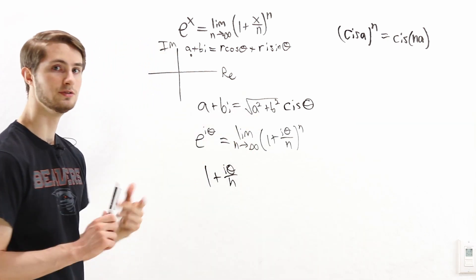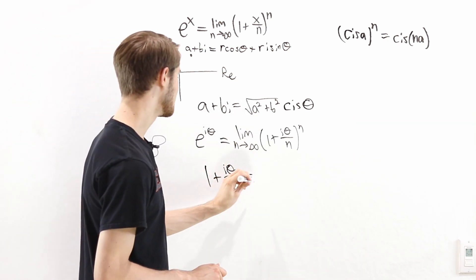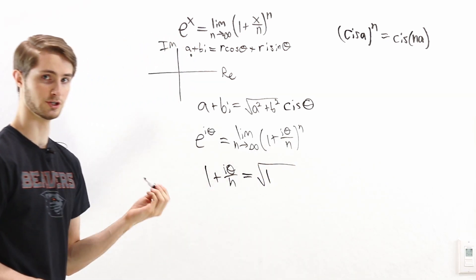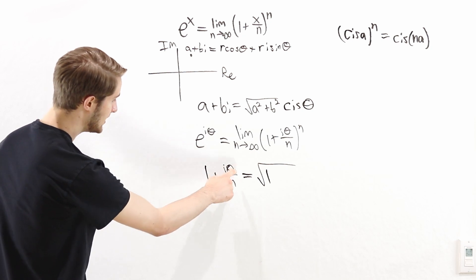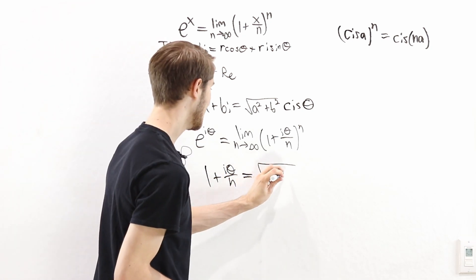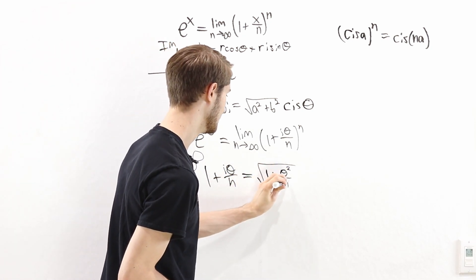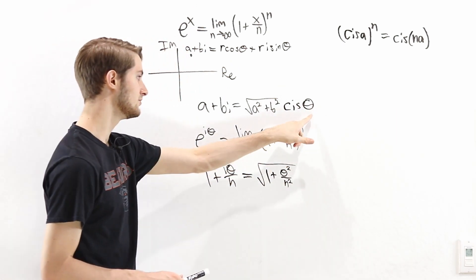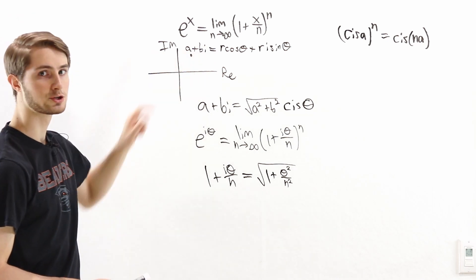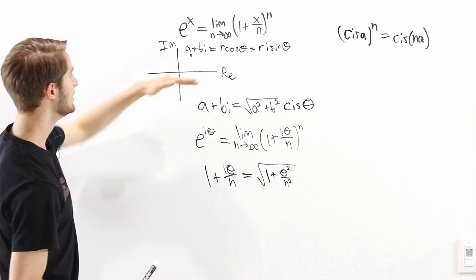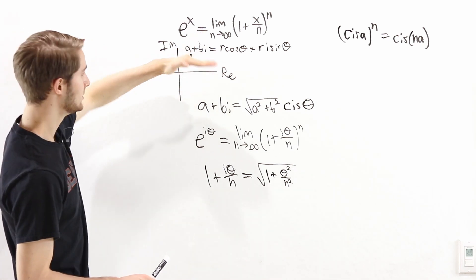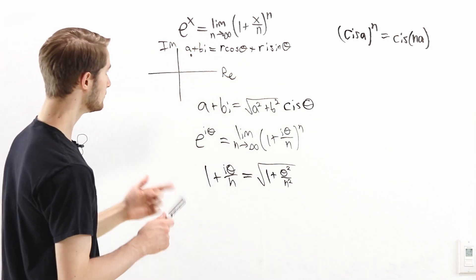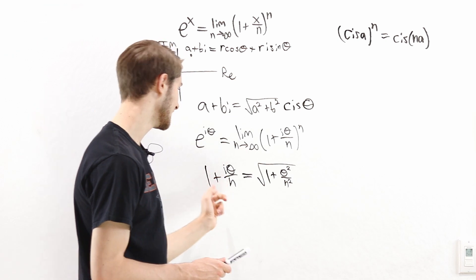First we need the magnitude — that's easy. We take the square root of the real part squared, which is 1 squared equals 1, plus the imaginary part squared, which is theta squared over n squared. So the magnitude is the square root of 1 plus theta squared over n squared. Next we need the angle. Theta is the angle of the complex number off of the real axis.